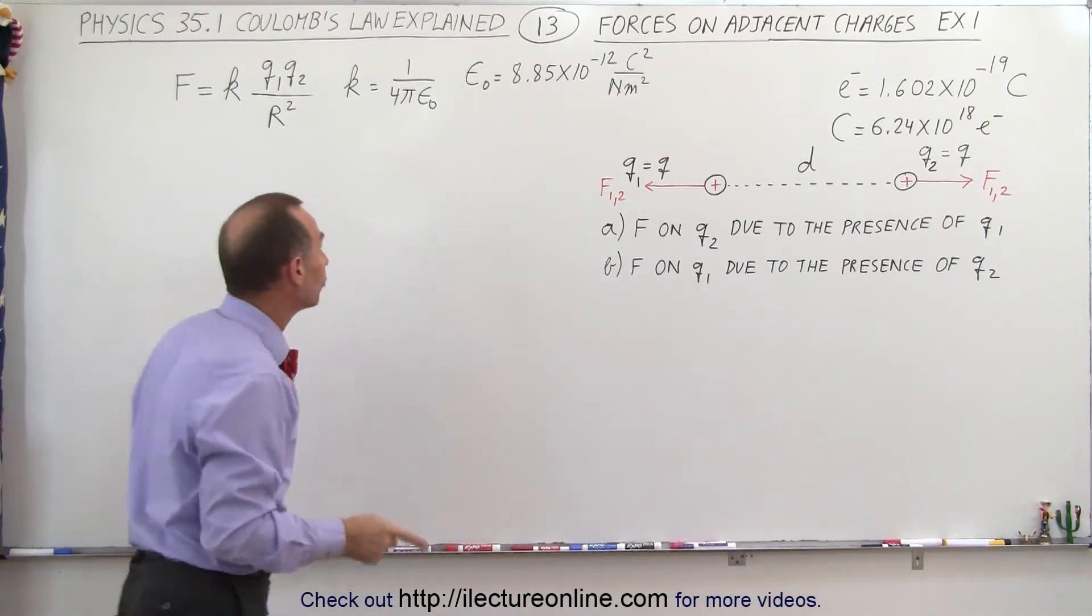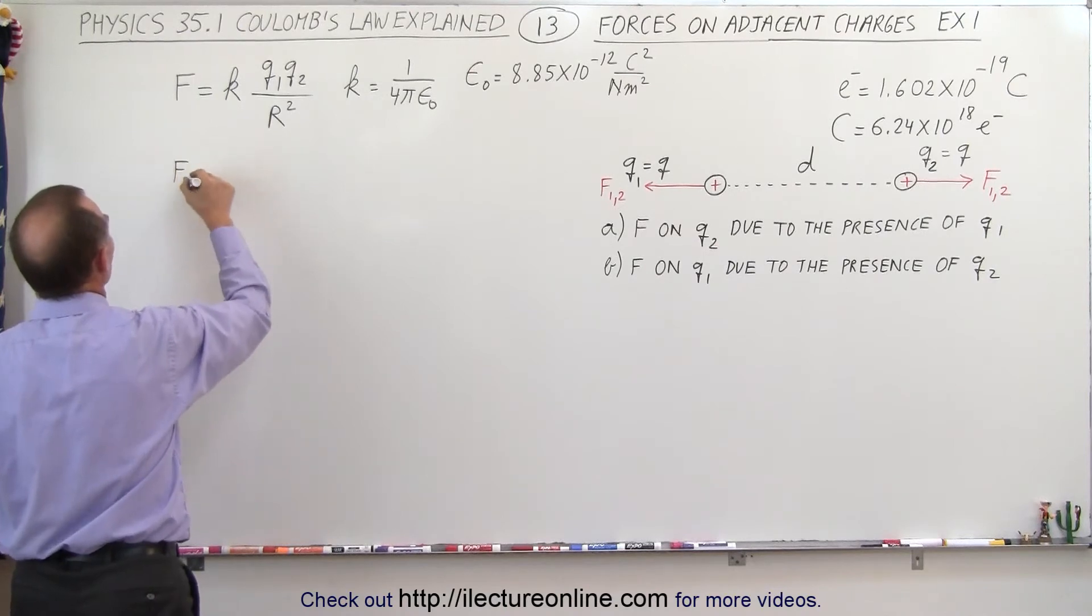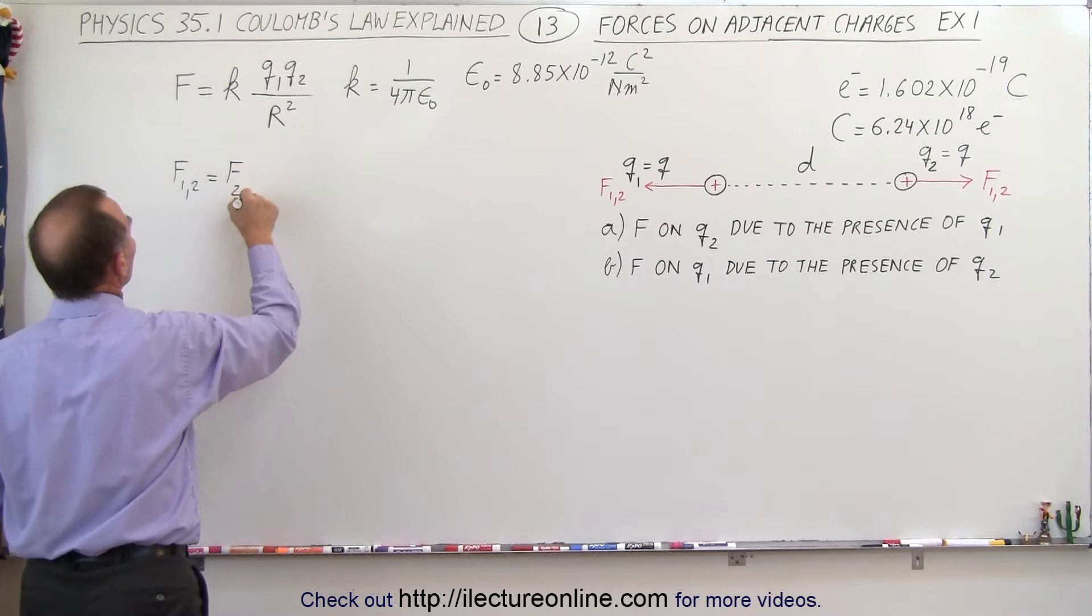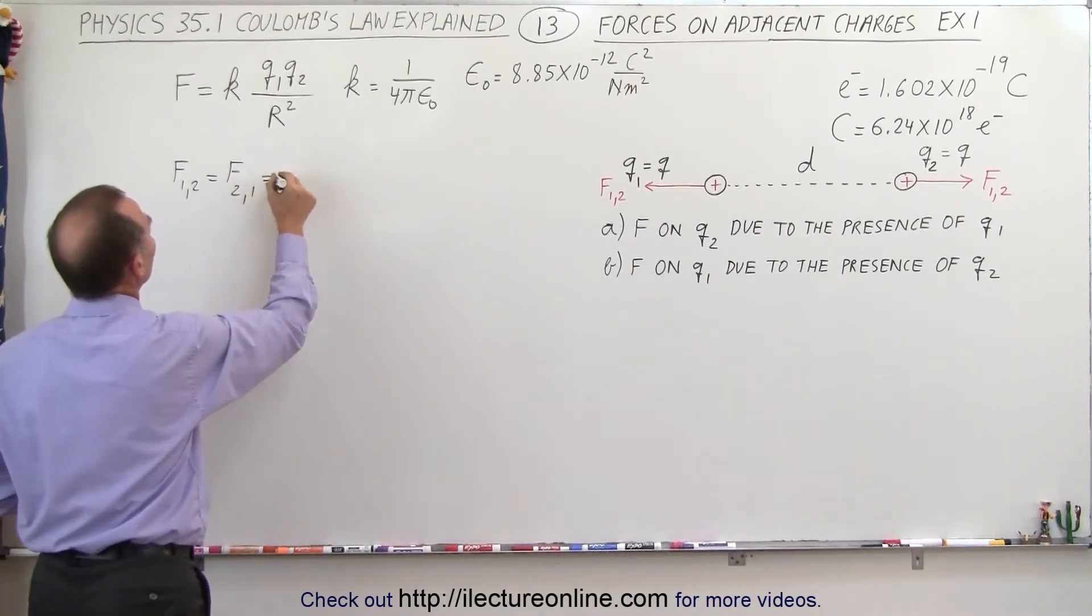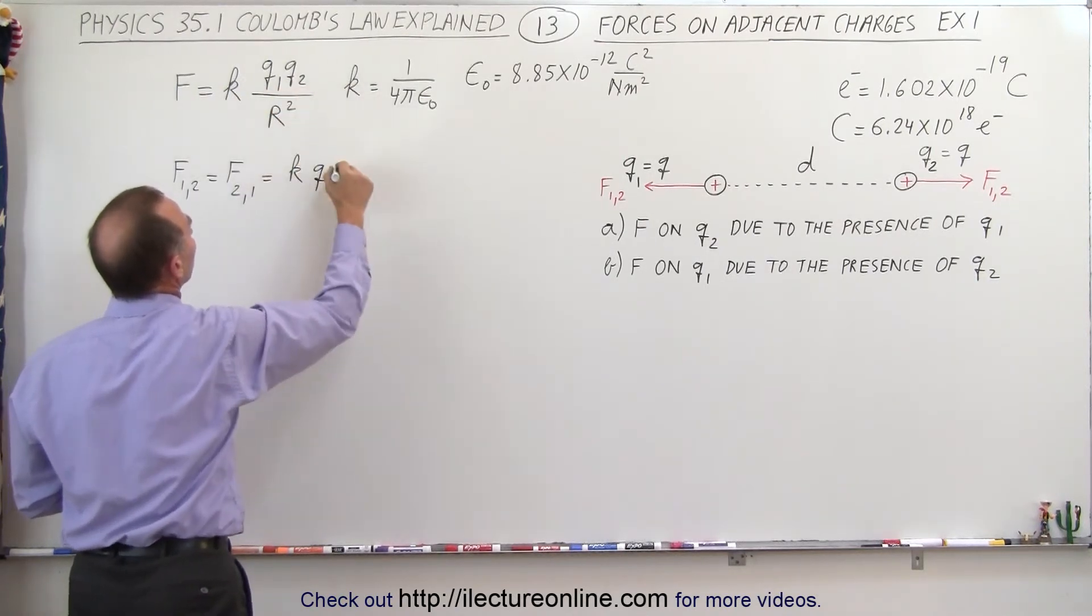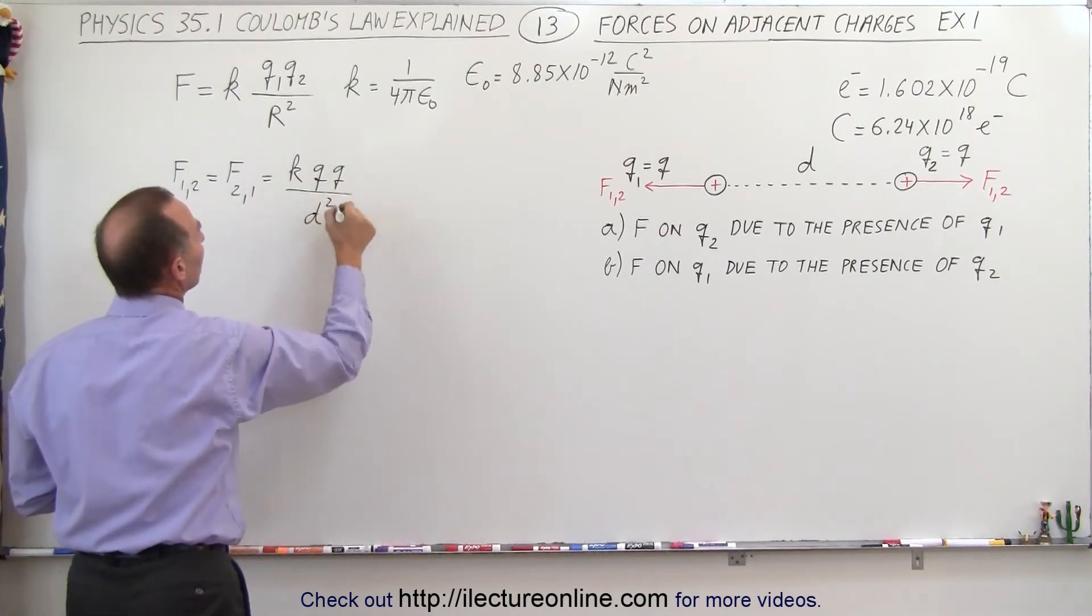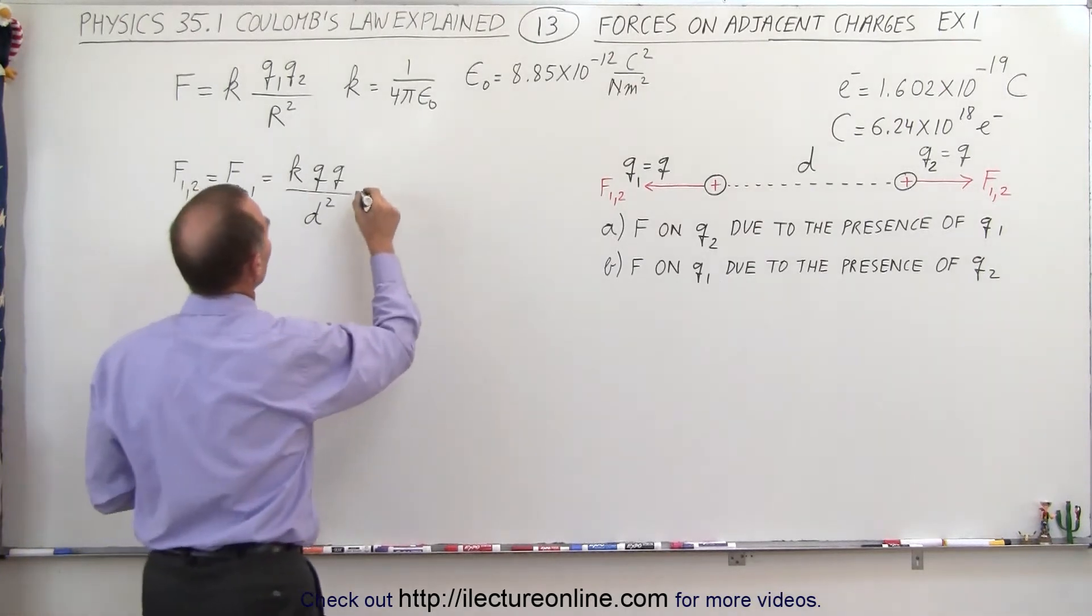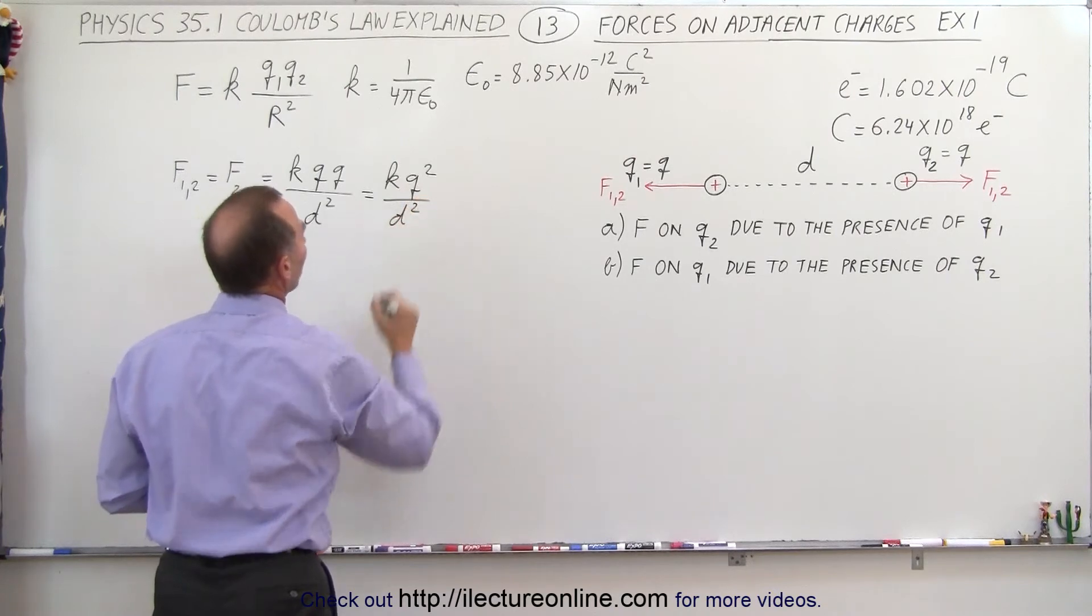To find the magnitude, we're going to use Coulomb's law. In that case we have the force between 1 and 2, which is equal to the force between 2 and 1, they're the same. This is equal to k times q1, which is q, times q2, which is q, divided by the distance between them squared. The distance is d, and we square that, so the magnitude of the force is going to be equal to kq² divided by d².